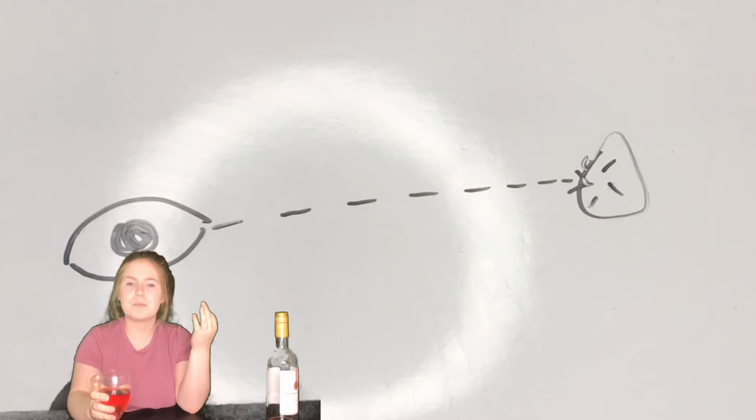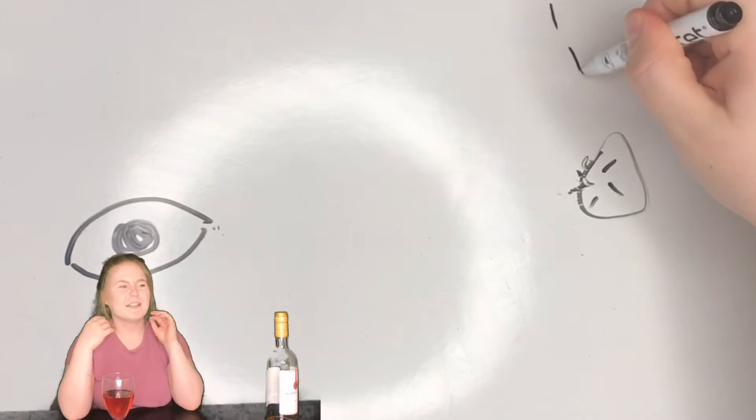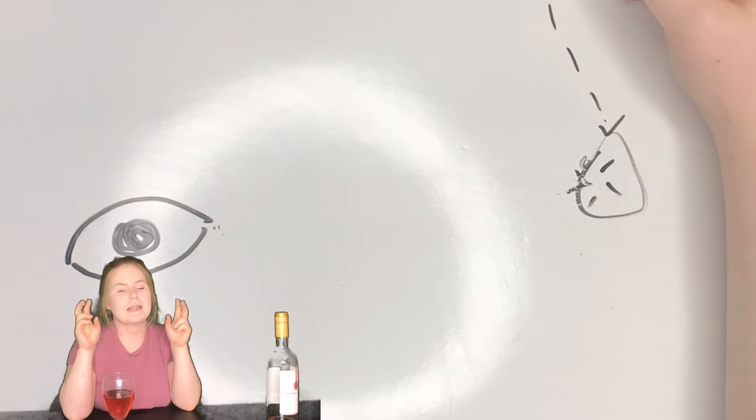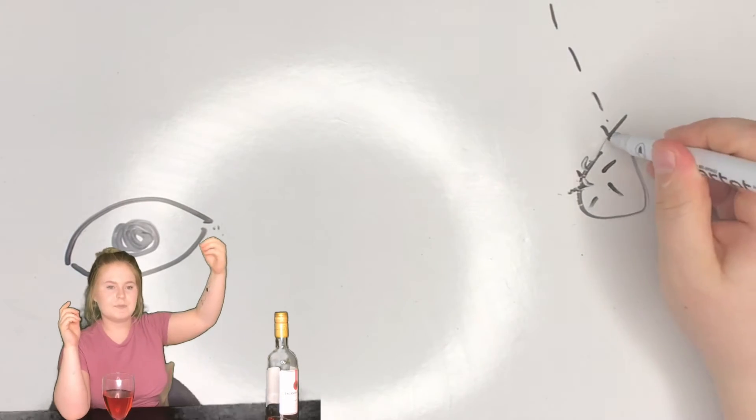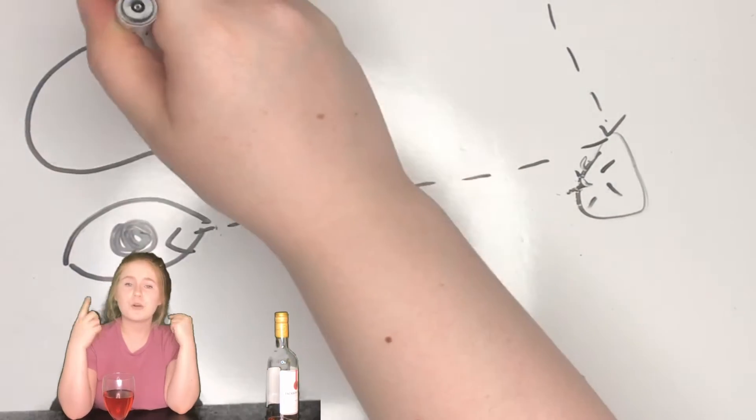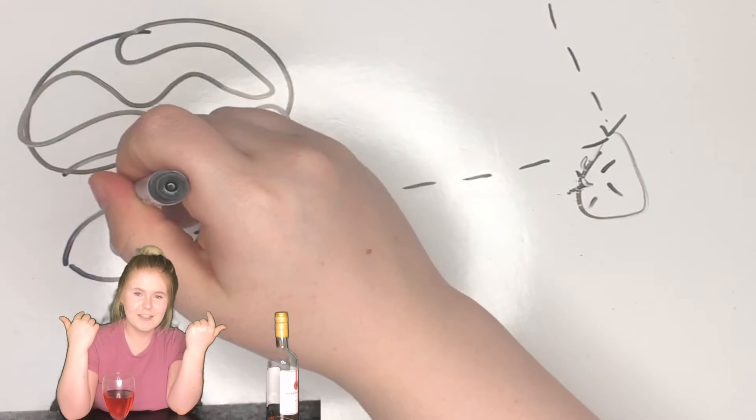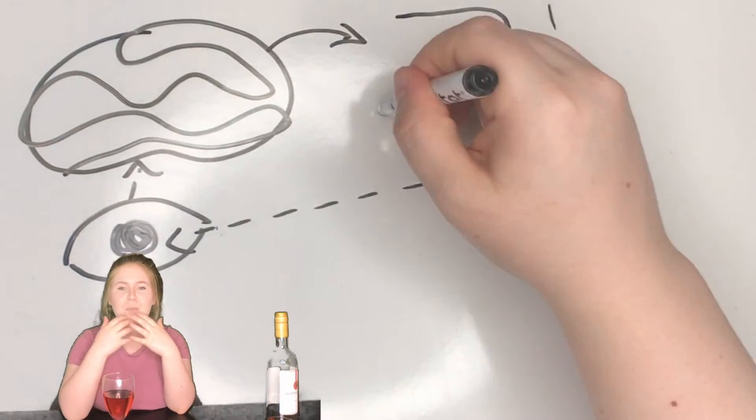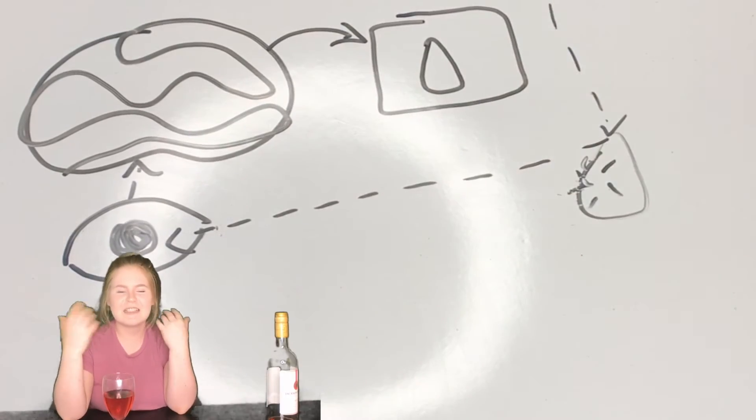To see something, you need electromagnetic waves. The electromagnetic waves, aka light, bounces off of an object to your eye and you process it in your head. And that's how you see something. So it's not passive. It's interactive.